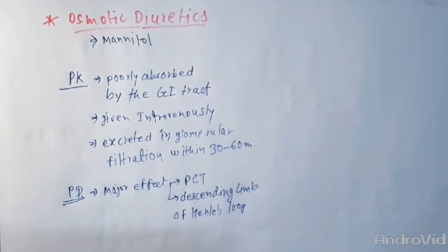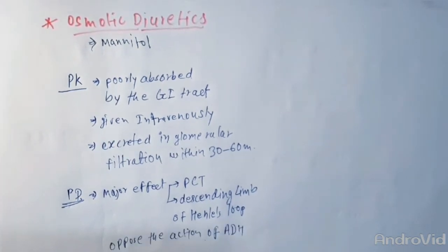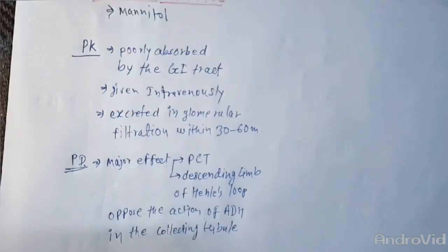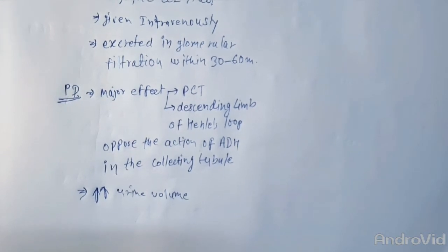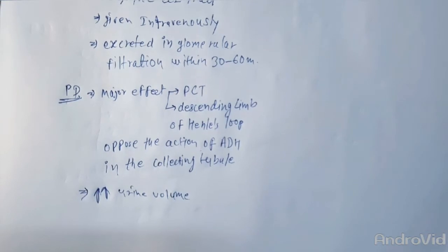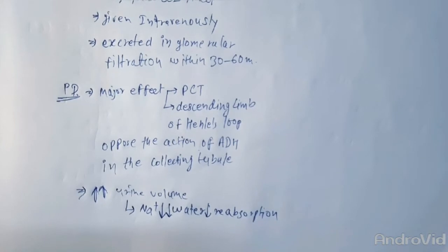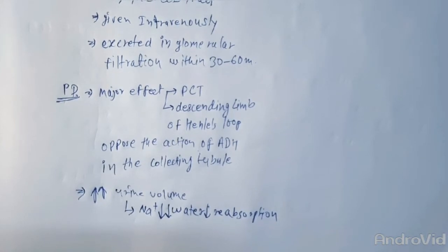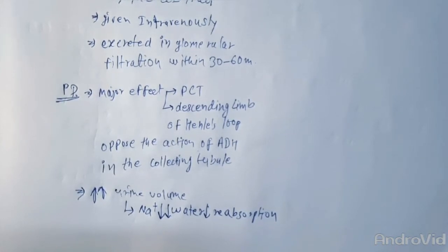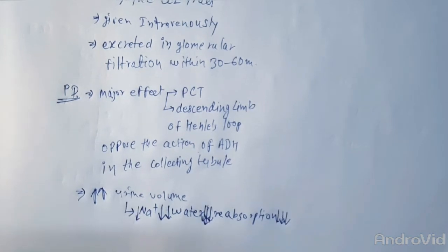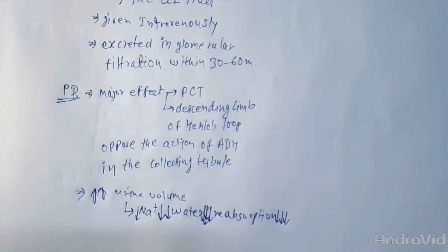Mannitol is not metabolized and is excreted in glomerular filtration within 30 to 60 minutes without any important tubular reabsorption or secretion. It must be used cautiously in patients with even mild renal insufficiency. Talking about their pharmacodynamics, osmotic diuretics have their major effect in the proximal tubule and the descending limb of Henle's loop. Through osmotic effects, they also oppose the action of ADH in the collecting tubule.